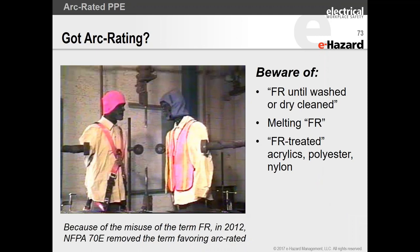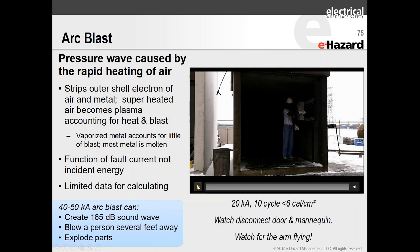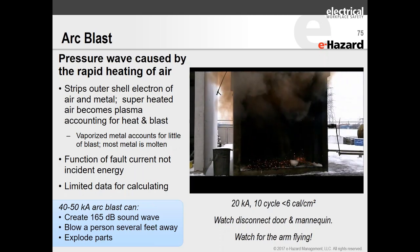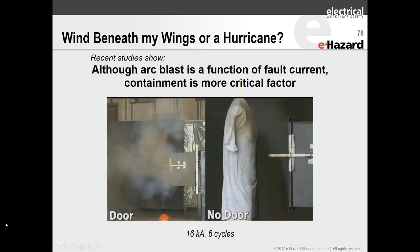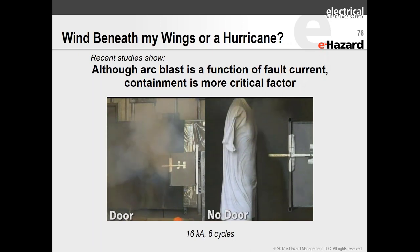FR and AR: it's important to make sure your clothing is arc-rated. FR was removed in 70E 2012 because the term was misused so widely. You can actually melt FR if there is an incident. Pressure waves are also important — in a demonstration with a mannequin at 20,000 kA, 10 cycles, less than 6 calories, watch the disc in air and the mannequin arm being moved by the blast. Containment is a more critical factor than arc blast as a function of fault current — the risks are very different in a contained fault versus an open fault.